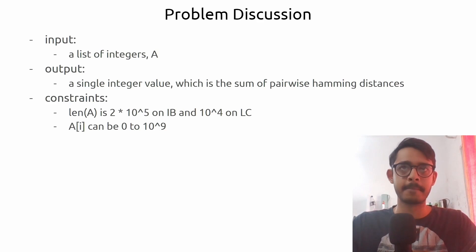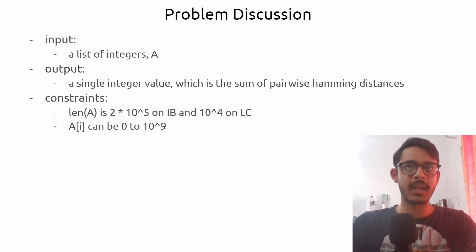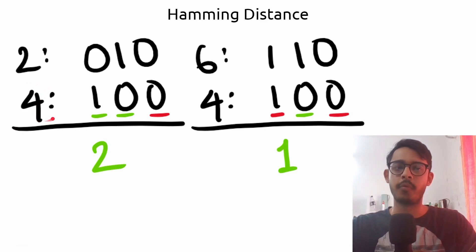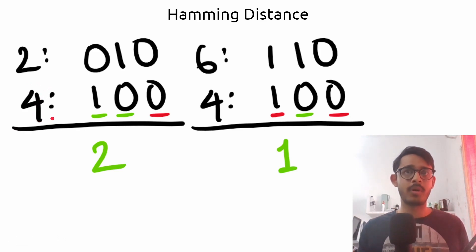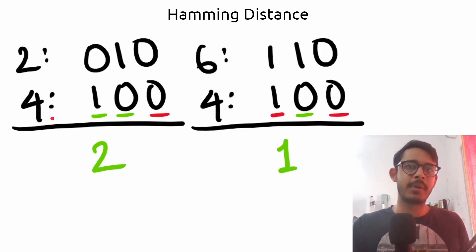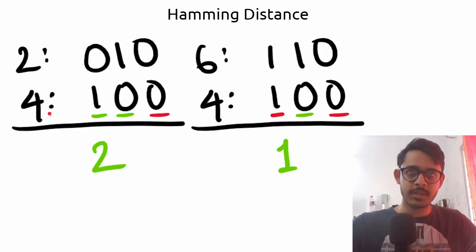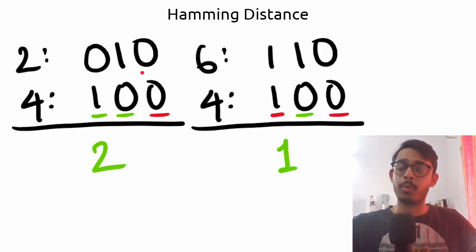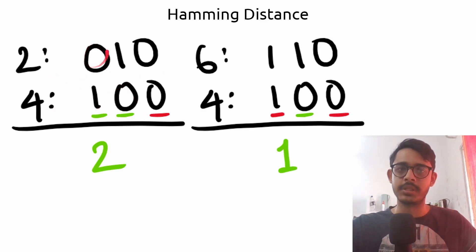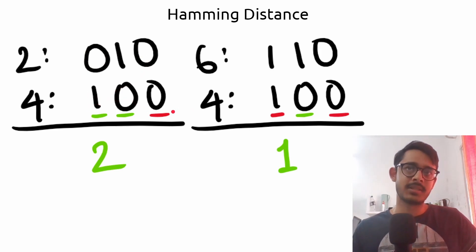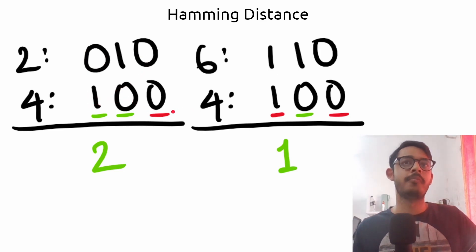But what does hamming distance mean? Let's take an example. Let's say we have the case of 2 and 4. Can you find the hamming distance between 2 and 4? It's very simple — we first convert both numbers into their binary representations. So 2 is 010 and 4 is 100.